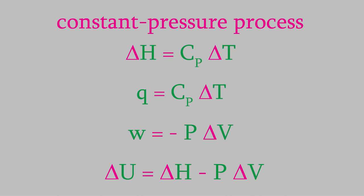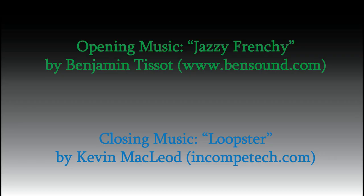So now we have expressions for heat, work, energy, and enthalpy for four different types of process: isothermal, adiabatic, constant volume, and constant pressure. These equations will be very handy in future discussions of thermodynamics, and you'll get plenty of practice in homework, tests, and quizzes. In the next video, we'll take a closer look at enthalpy and start using it to learn about the thermodynamics of chemical reactions. I hope you'll join me — have a good week!